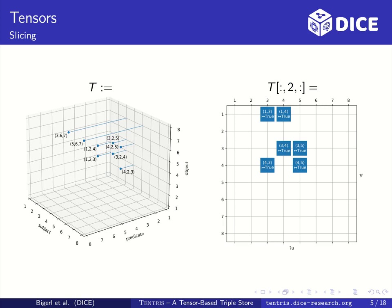One operation on tensors used by Tentris is slicing. Slicing is an operation that returns a well-defined portion of a tensor in the form of a lower order tensor. In this example we see a slice by a slice key which fixes the second dimension to the key part 2. It leaves the first and last dimension unbound. The result is a matrix which contains those entries of T for which the second key part is 2.